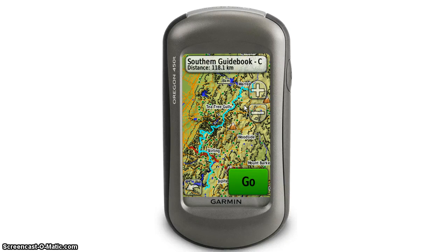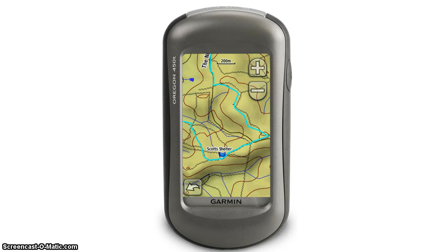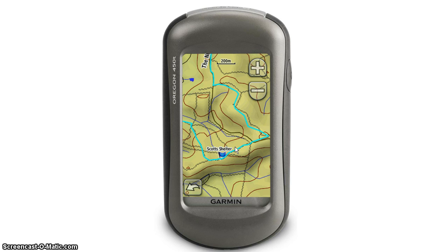We need to zoom in a bit to see any detail. From the zoomed-out level we can't see any of the waypoints, just some broad town names. If we zoom right in, we can see the Heisen Trail marked in cyan, and we can see a waypoint — Scott Shelter — a campsite on the trail. Back in the Track Manager, we can actually change the colour of the track, make it thicker so it's easier to see, and change it to a different colour.